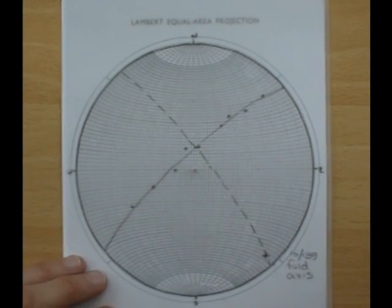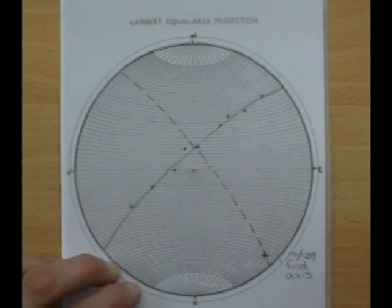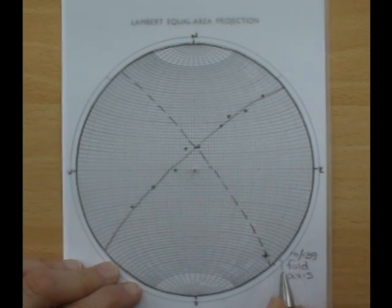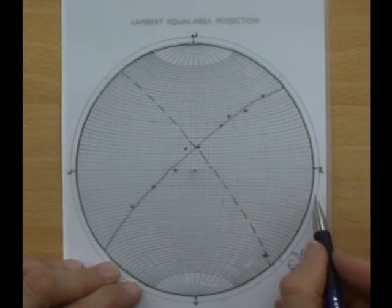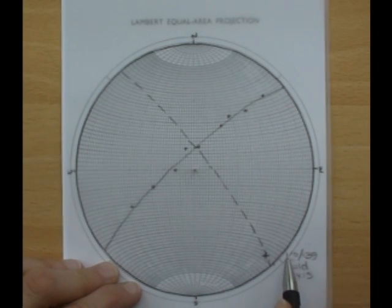To get the strike and dip of the axial plane we can measure the strike off directly. So 90, 100, 110, 20, 30, about 140 degrees.